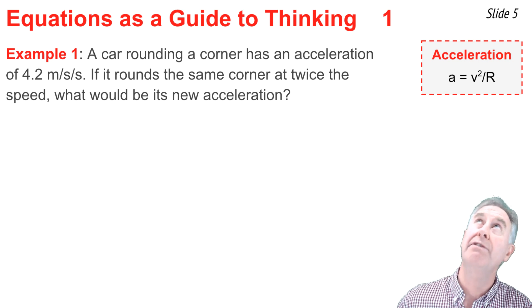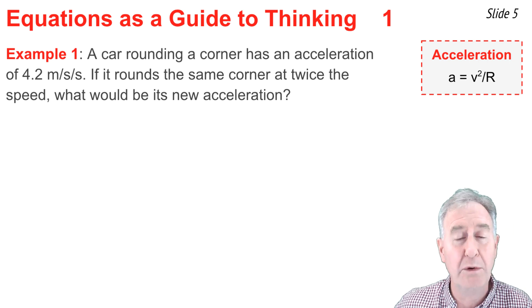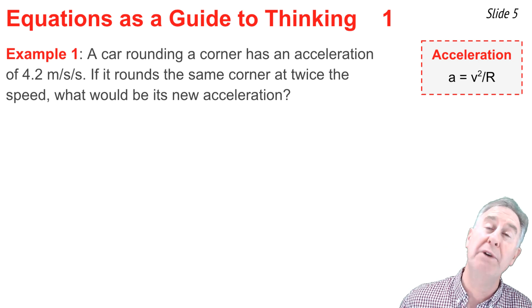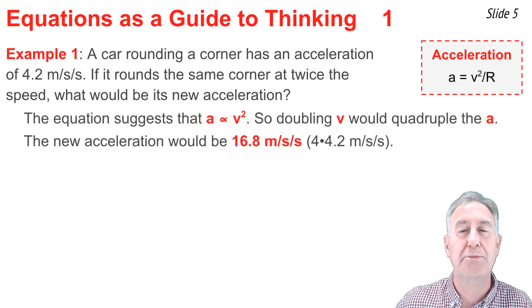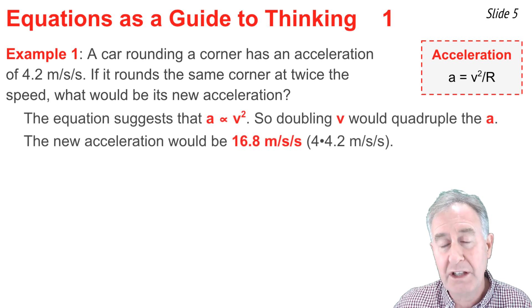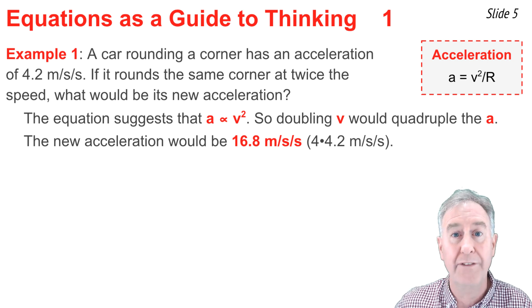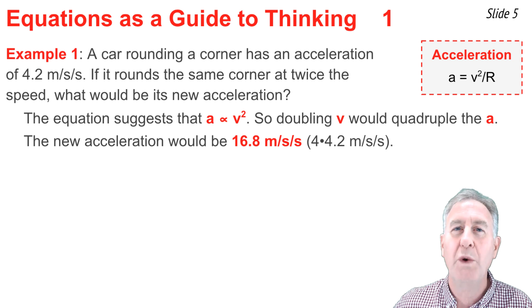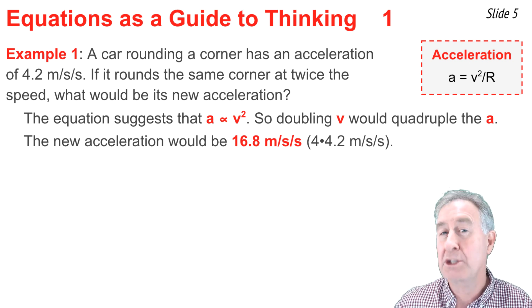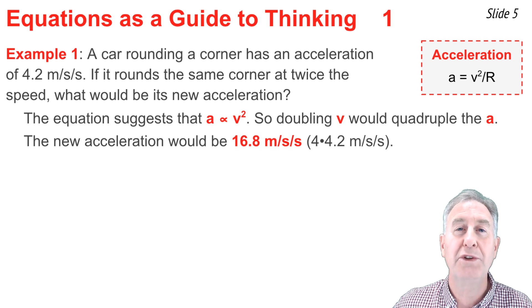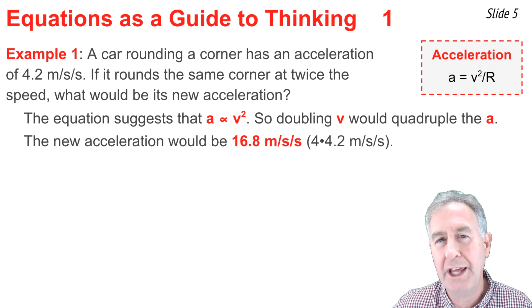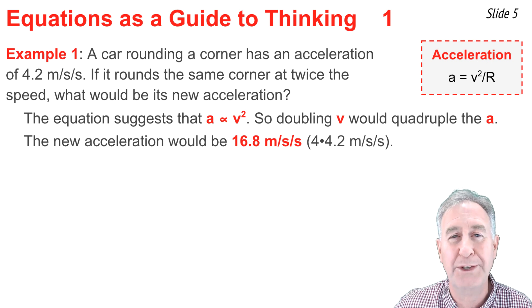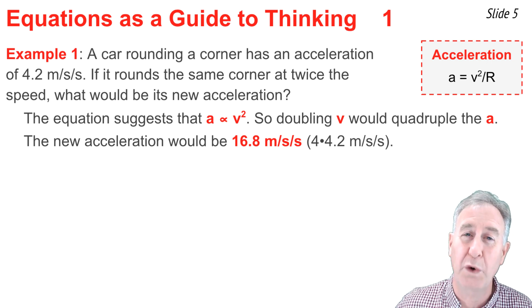So to answer this question, I need to focus on the equation a equal v squared over r. And from the equation, I realize that the acceleration is directly proportional to the speed squared. In making this claim, I'm saying that a doubling of the speed would cause the acceleration to quadruple. Quadruple because the speed is being squared. So the new acceleration would be 16.8 meters per second per second. I get that by taking the original acceleration of 4.2 and multiplying it by 4.